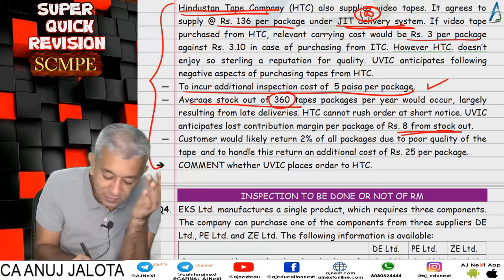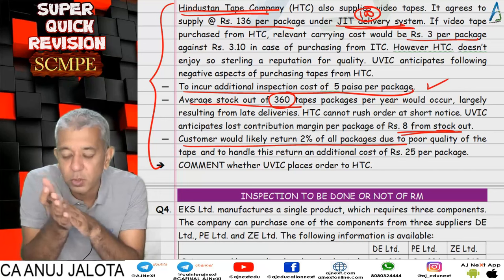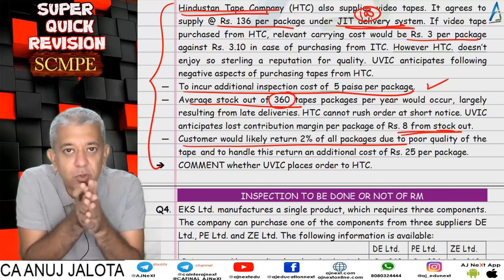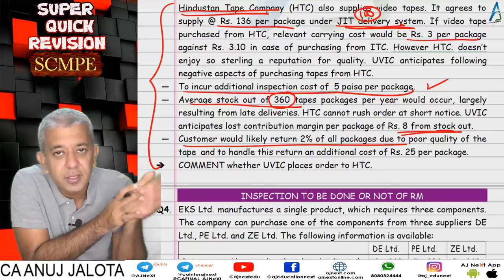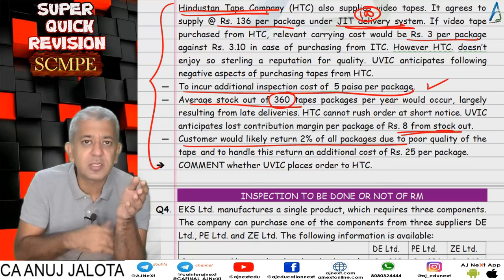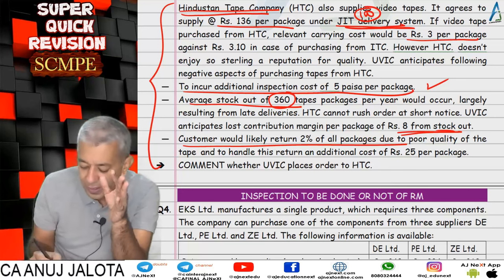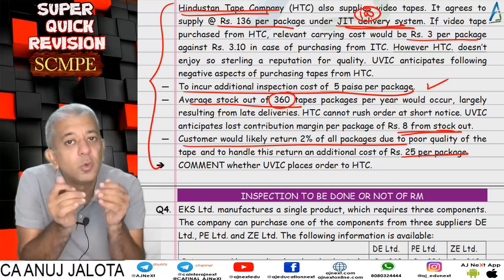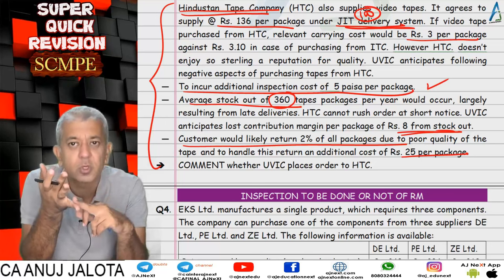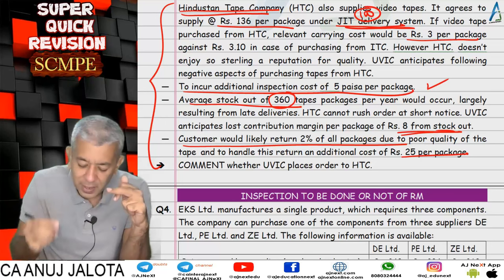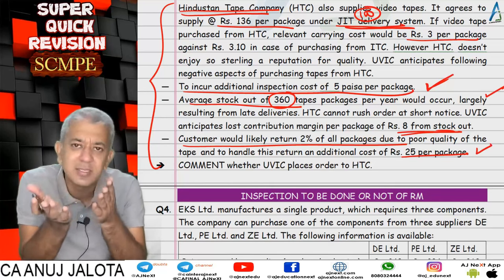There will also be returns — at the rate of 2 percent of all packages. So 2 percent of 13,000 units: the customer returns them to us (UVIC), we return to the vendor, the vendor replaces them free of cost, but we bear the courier cost at rupees 25. So under the HTC option, the costs are: total purchase cost, ordering cost, carrying cost, inspection cost, stock-out cost, and replacement/courier cost.